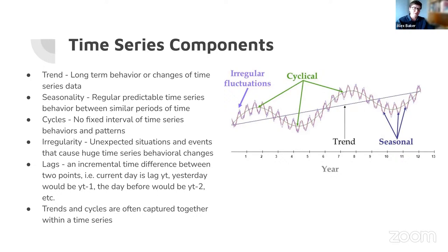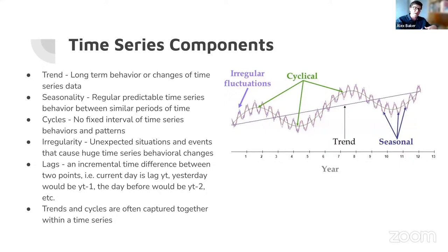The cycles are captured in the trend analysis within models, while seasonality is incorporated separately as an additional component. Irregularities are those unexpected changes — like white noise, the random noise you would expect any data to have. A lag is an identifier for a particular increment of time: yesterday would be Y(t-1), the day before would be Y(t-2), and so on. This term is used throughout time series analysis.